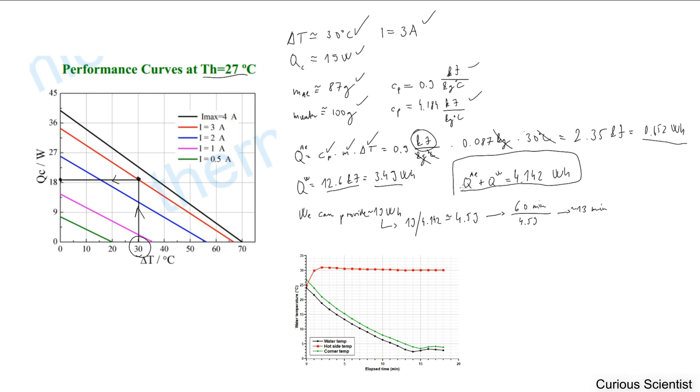Then we know we can provide 19 watts per hour basically. The cooling output of the Peltier device at 3A when we try to provide 30 degrees delta T is 19 watts. So we run this device for one hour and it will be 19 watt-hour.